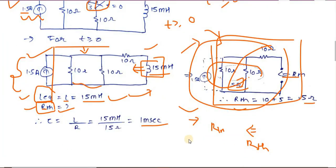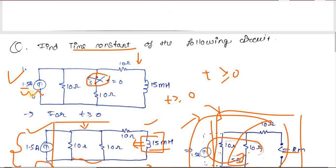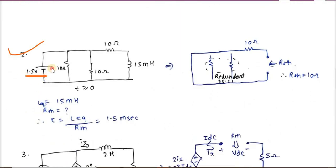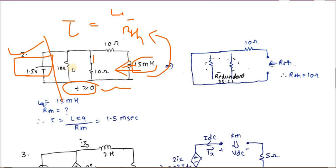The second example is a modified version of the first, but now with an independent voltage source of 1.5 V and the same resistor network. For t ≥ 0, the switch is closed. Again, L equivalent = 15 mH. For Rth, we look from the inductor terminals and eliminate the independent voltage source by short-circuiting it, since the internal resistance of an independent voltage source is 0 Ω.